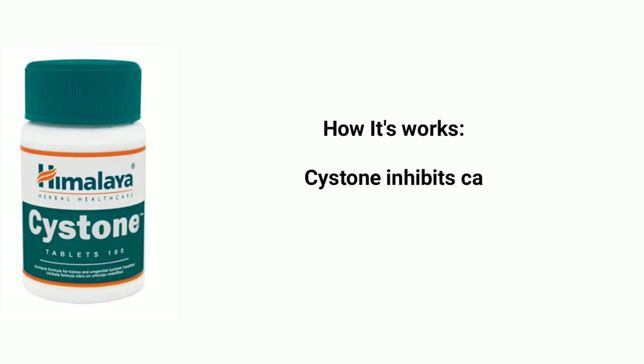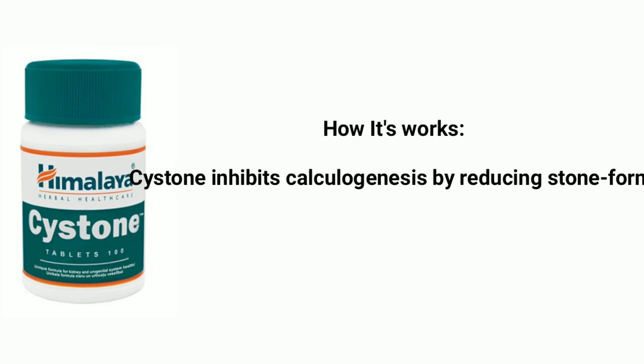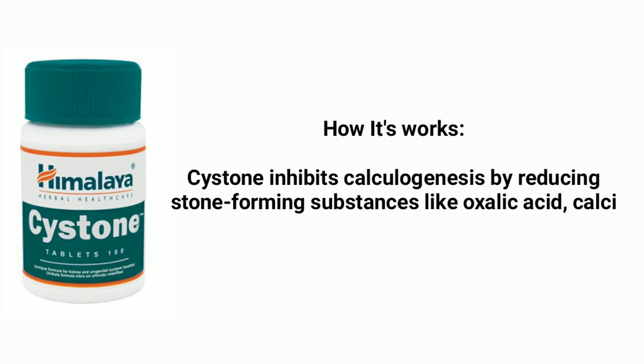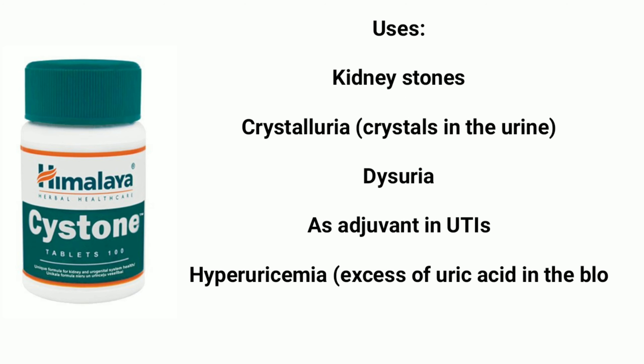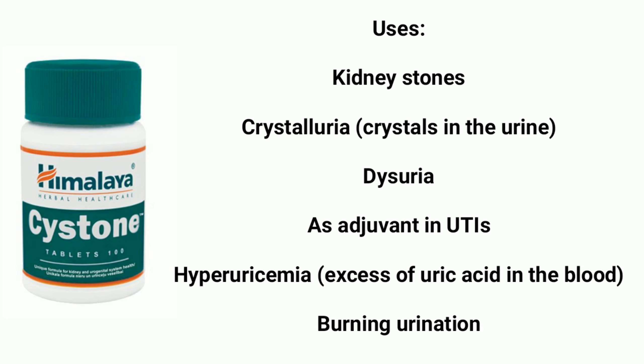How it works: Cystone inhibits calculogenesis by reducing stone-forming substances like oxalic acid, calcium hydroxyproline, etc., and causes their expulsion by micropulverization.